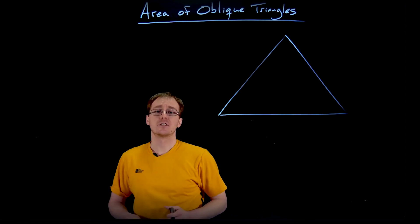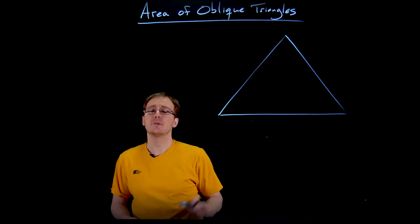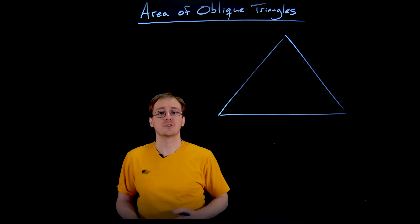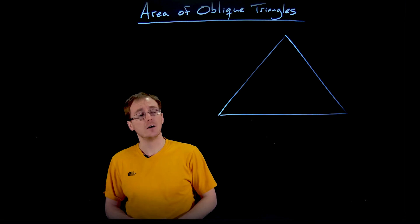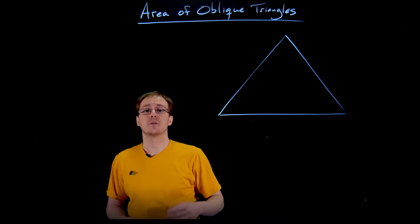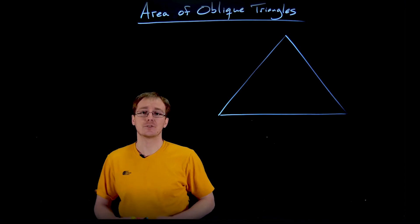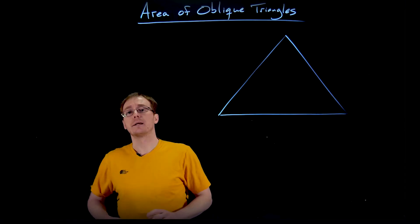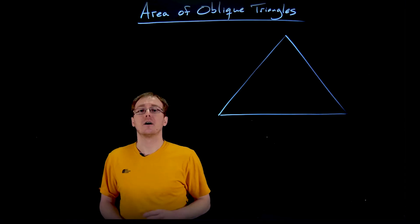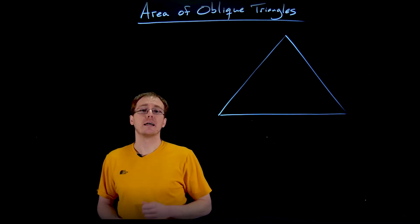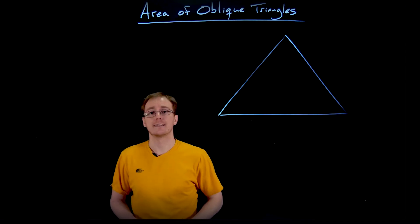This is similar to our derivation of the law of sines in that there's kind of two arguments or pictures that we can draw here for an oblique triangle, one with acute angles and one with an obtuse angle. The arguments are essentially the same and we get the exact same result either way. So we're just going to draw our picture and make our argument for the oblique triangle with small angles, those acute angles all less than 90 degrees.